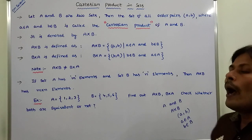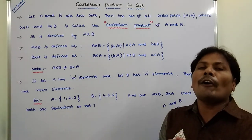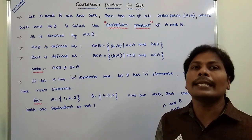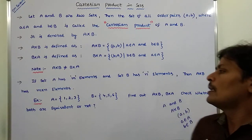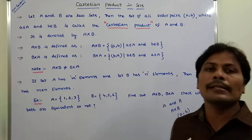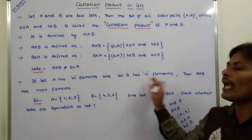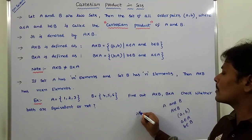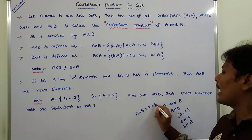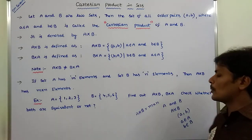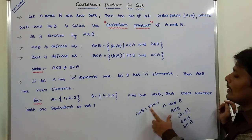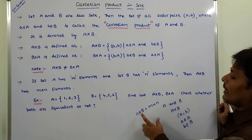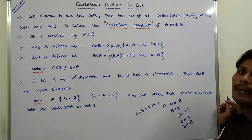How many ordered pairs are present in A cross B? Suppose set A has M number of elements and set B has N number of elements, then A cross B has M into N number of elements. So if set A has M elements and set B has N elements, then A cross B contains MN elements.